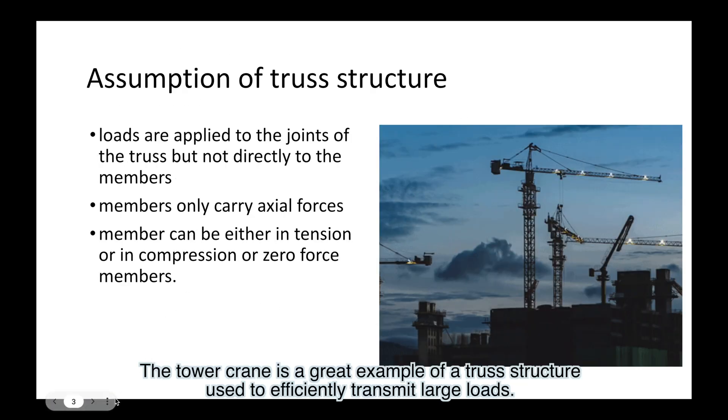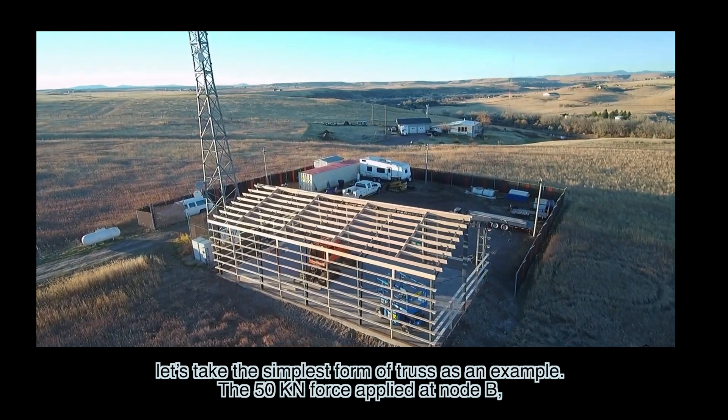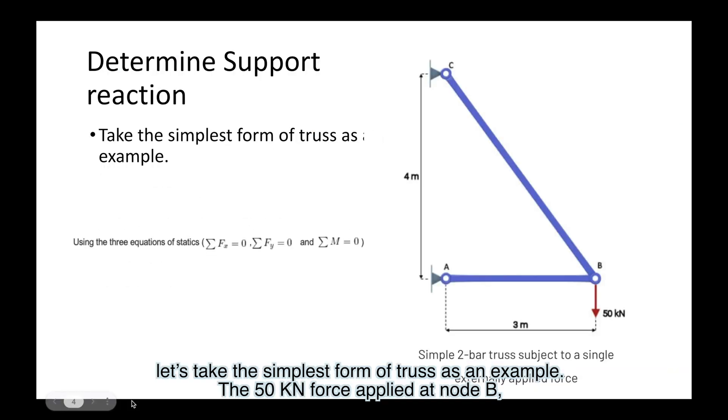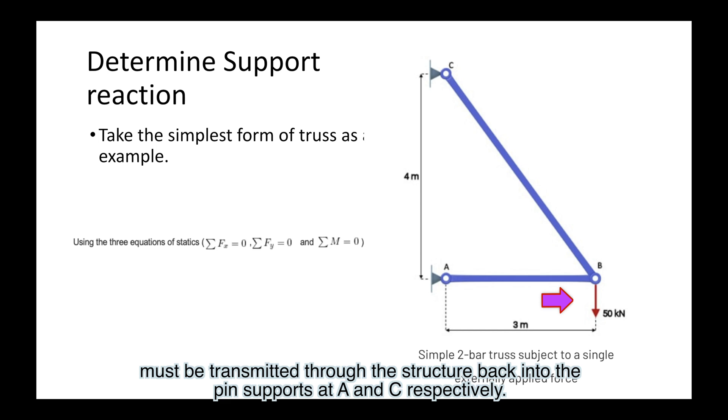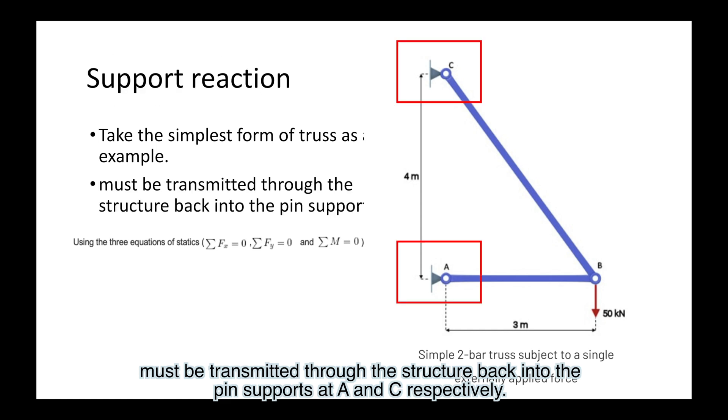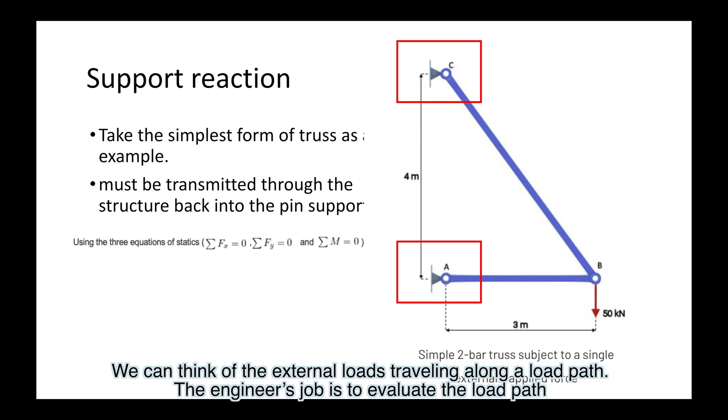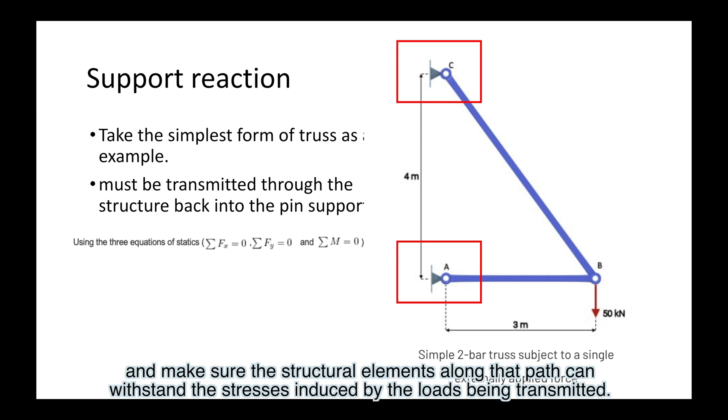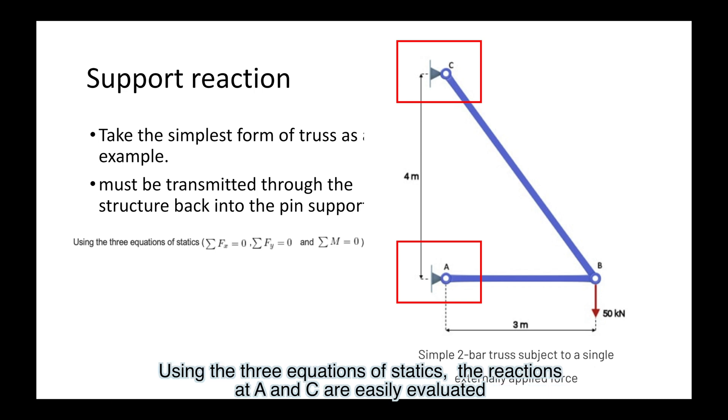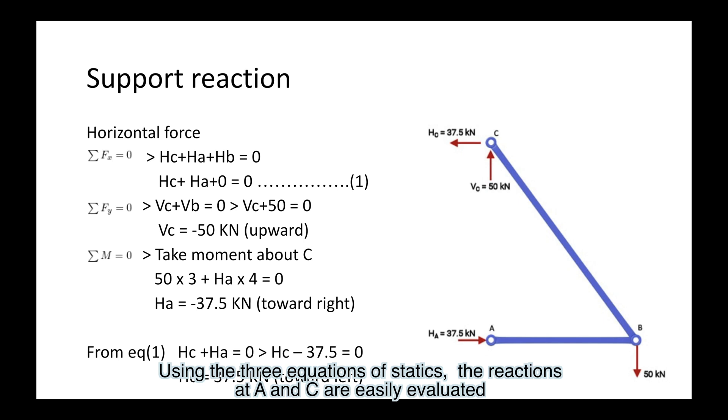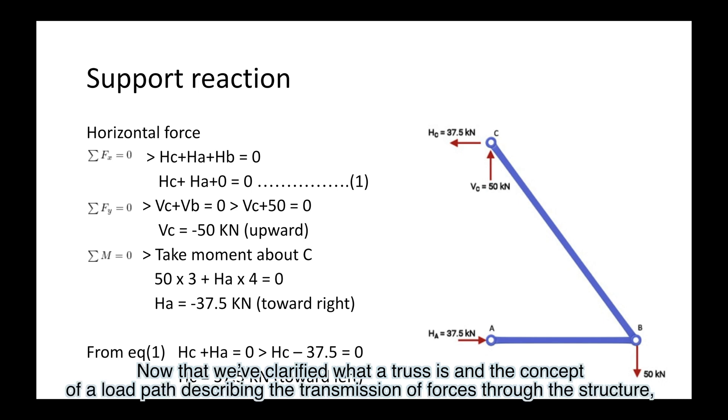The tower crane is a great example of a truss structure used to efficiently transmit large loads. Let's take the simplest form of truss as an example. The 50 kN force applied at node B must be transmitted through the structure back into the pin supports at A and C respectively. We can think of the external loads traveling along a load path. The engineer's job is to evaluate the load path and make sure the structural elements along that path can withstand the stresses induced by the loads being transmitted using the three equations of statics.